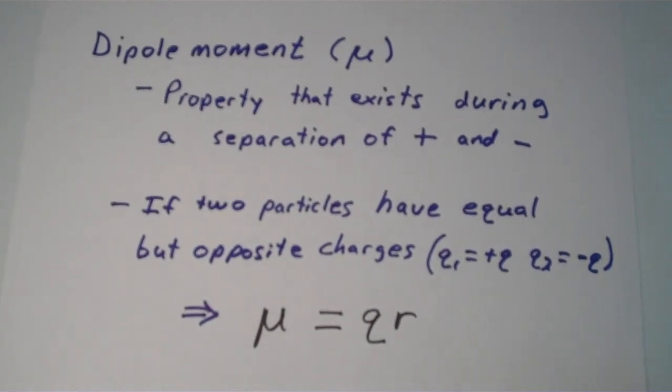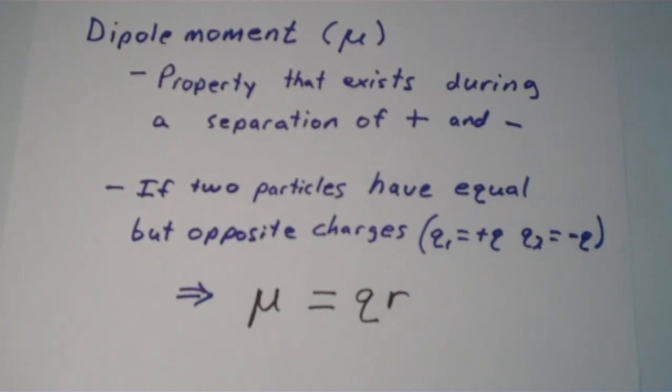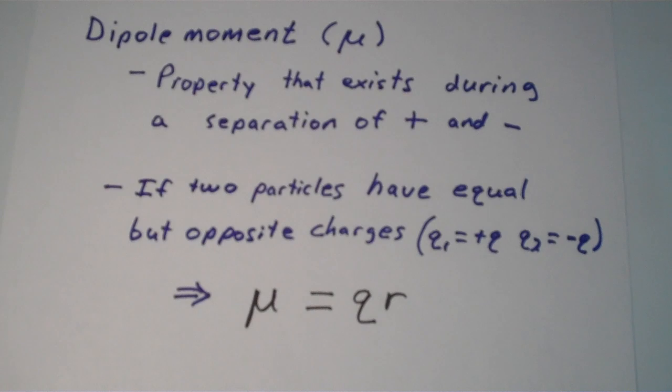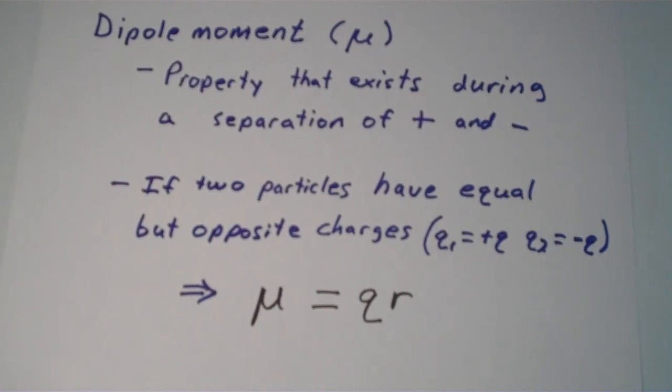The dipole moment, which is denoted by mu, is a property that exists any time there's a separation of positive and negative charges. From here on out, let's make the simplifying assumption that there are two particles that we're talking about here, and they have equal and opposite charges.